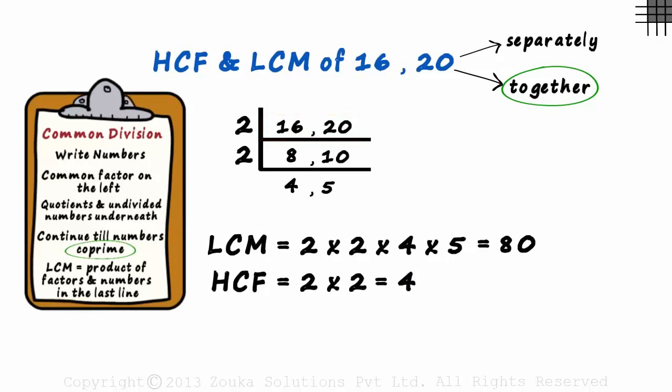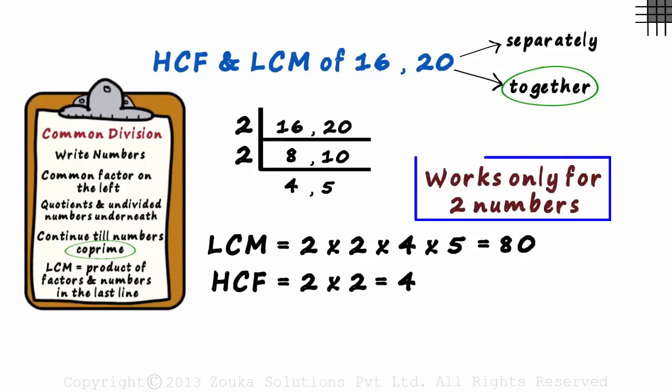So you could see that just this one method gave us the HCF as well as the LCM of two numbers. But we also have to note that this works only for two numbers.